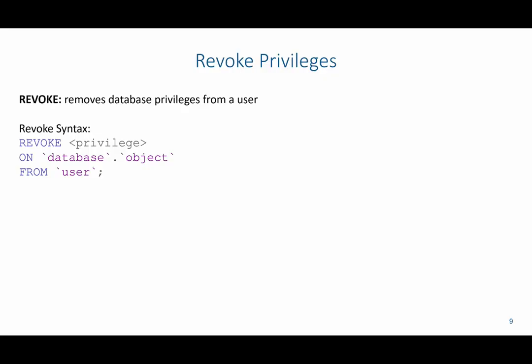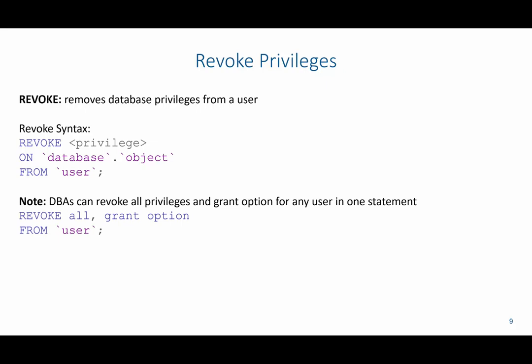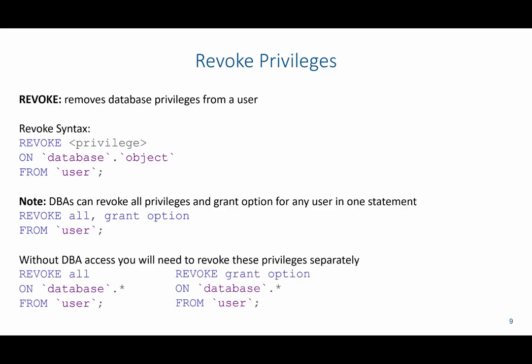Contrary to granting privileges, we can revoke privileges from the database, which removes those database privileges. The syntax is very similar to granting — we change GRANT to REVOKE and TO to FROM: REVOKE privilege ON database.object FROM user. If you're a database administrator, you can revoke all privileges and grant option in one statement using REVOKE ALL, GRANT OPTION FROM user. However, if you don't have DBA access, you will need to revoke all privileges first and grant option separately.